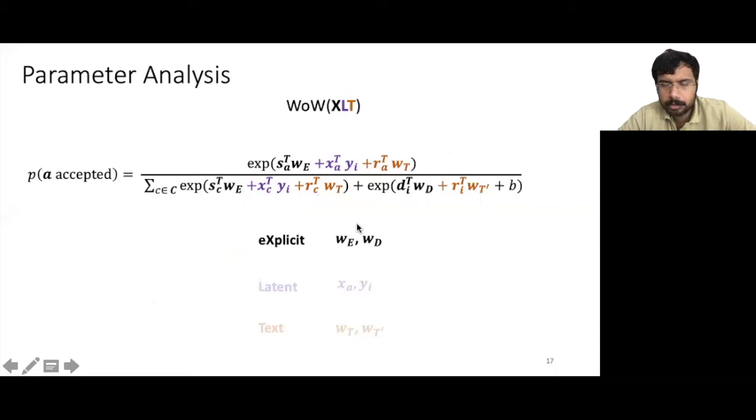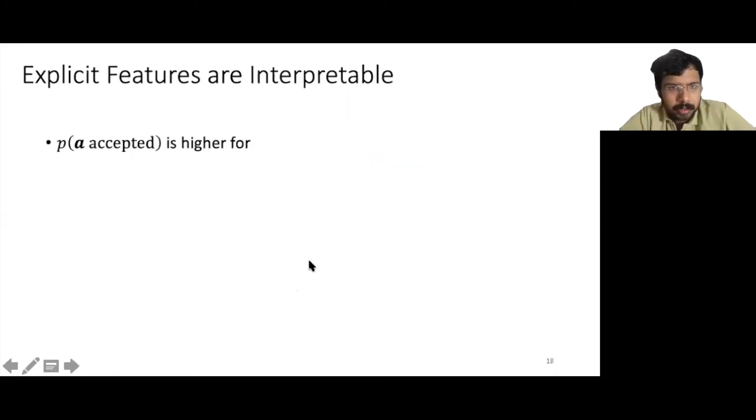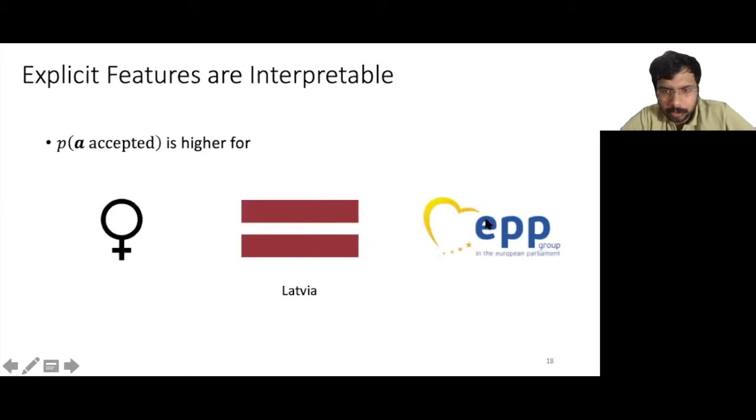It turns out that these explicit features are interpretable. We see that the probability of acceptance for an edit is higher if the author is female, or is from the country of Latvia, or if they belong to the European People's Party political group, which is a center-right group. It's also higher for short insertions, edits that are proposed by the chairperson, and also edits with justification.